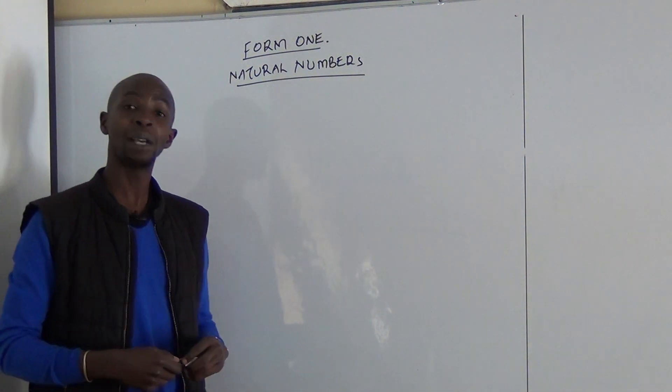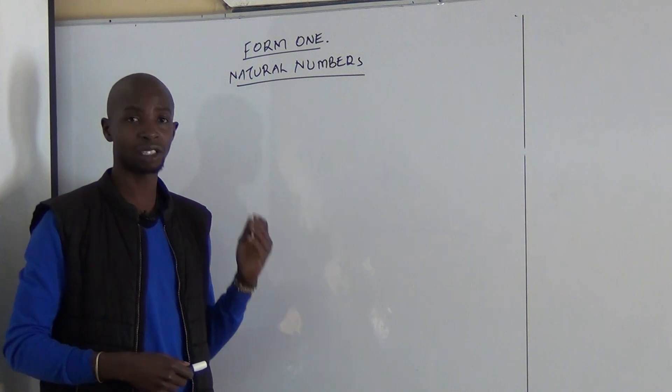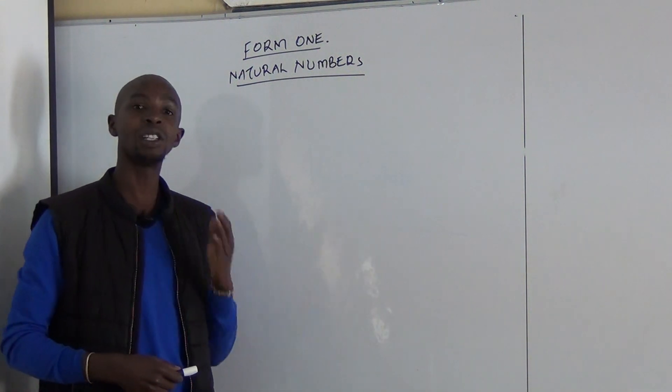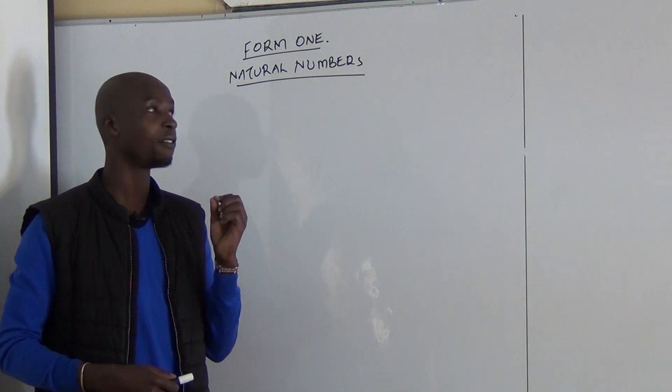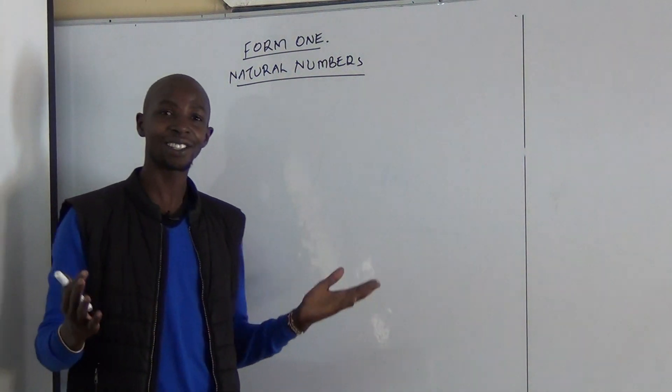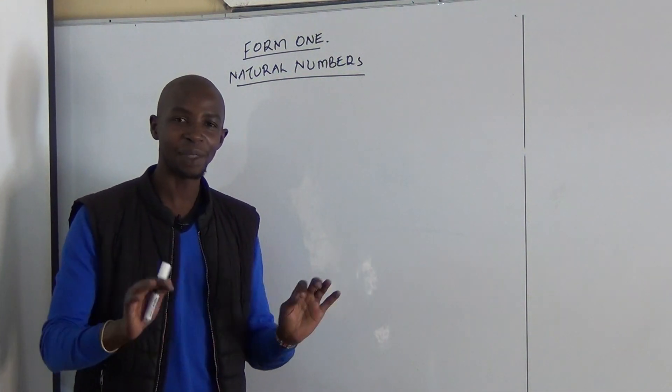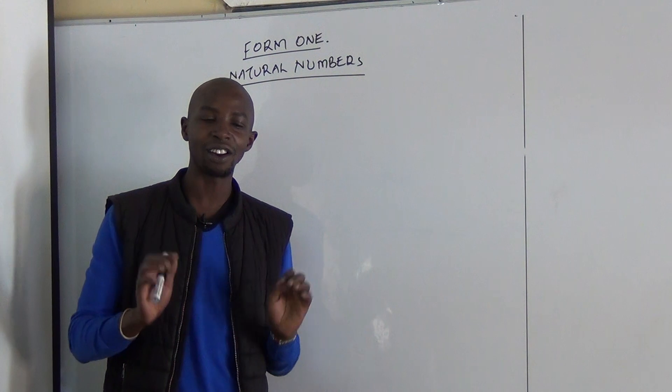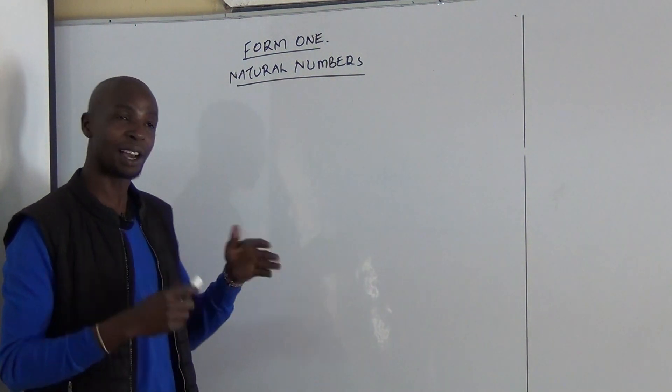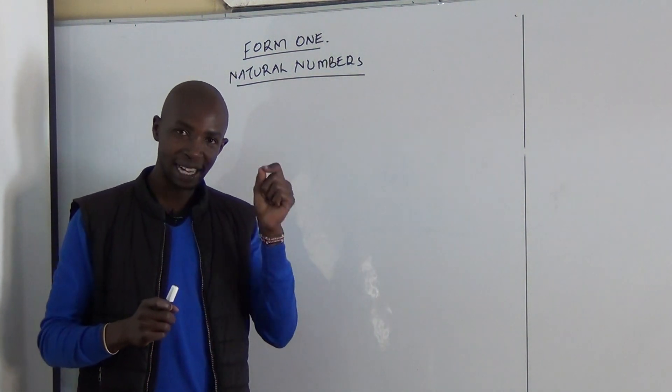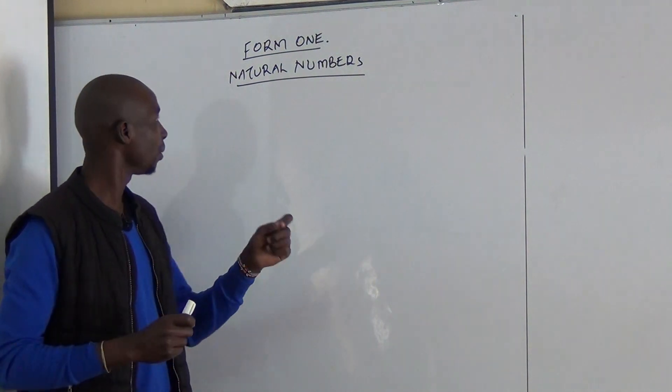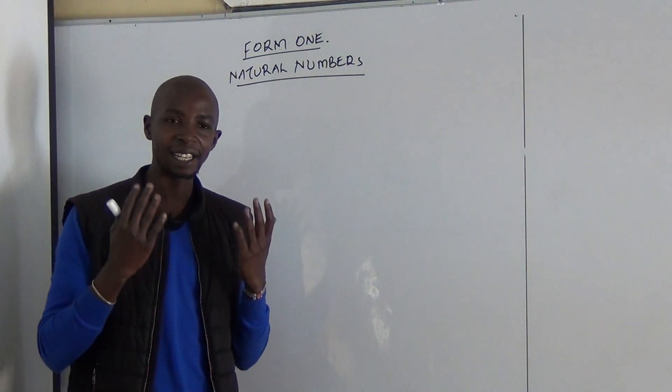Numbers are basically mathematical symbols that are used to denote a quantity or a value. And natural simply means something that exists without any alteration. So, natural numbers are those that denote quantity or value and they exist the way they are.